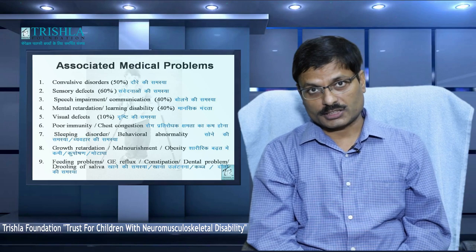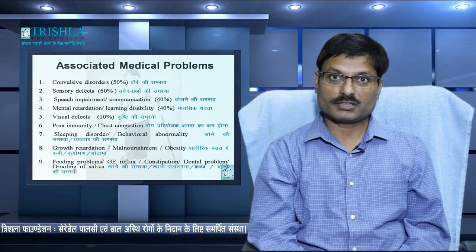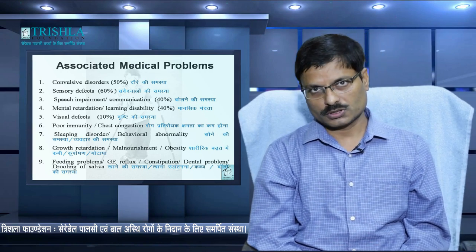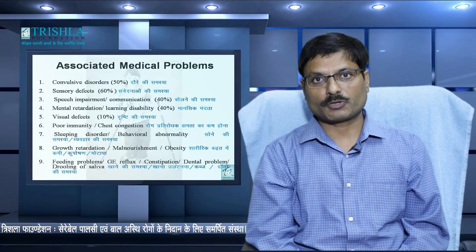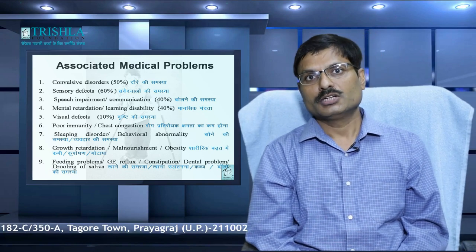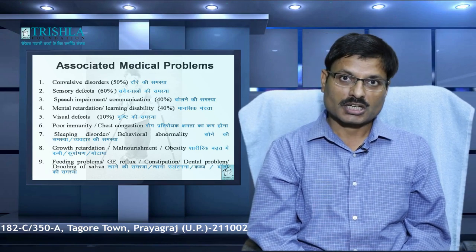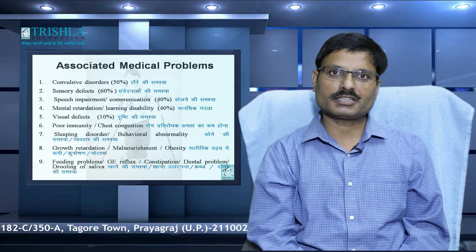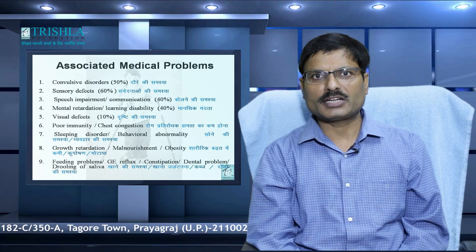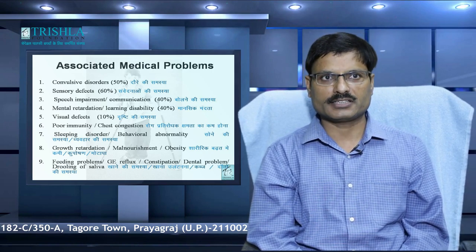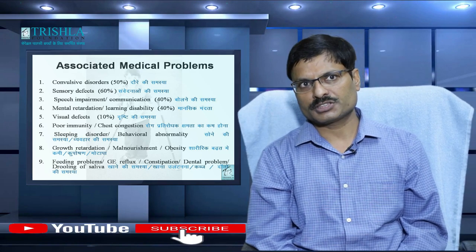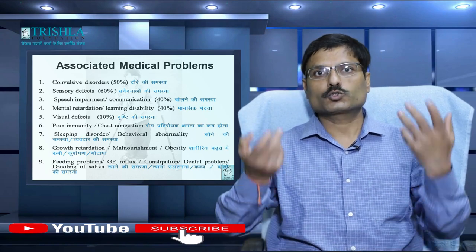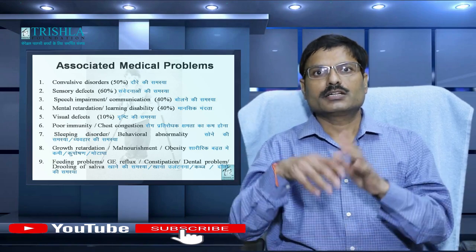Now we should know the associated medical problems — this is very important because most parents are focusing only on the ability to walk, sit, and take food. But there are many other associated medical problems, and not taking care of them means the child will not have a good quality of life. As you know, convulsions — epilepsy — are very common in cerebral palsy, occurring in 50% of children. This should be treated along with other problems, and drugs given by the neurologist should be continued for years according to their advice and titrated according to the child's weight and age.